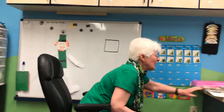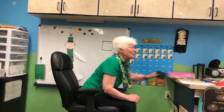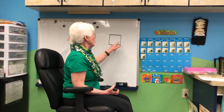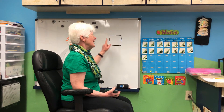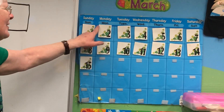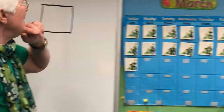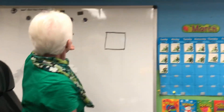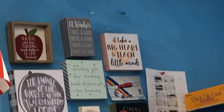Look around your house — can you find things that are square? At school we have squares on our calendars. There's probably a lot of squares around school. Maybe there are some around your house too. There are squares on my signs.